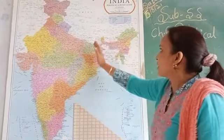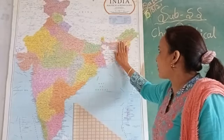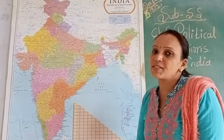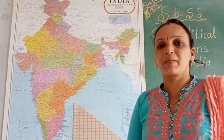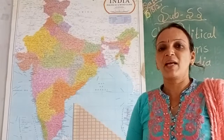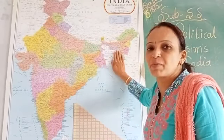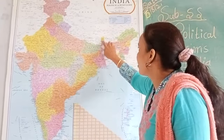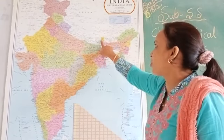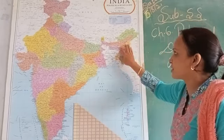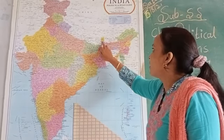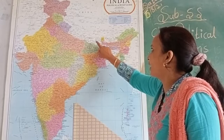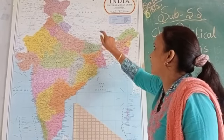These seven states are the seven eastern parts of India. Now, you know about the sisters — but who is their brother? This sister's brother is Sikkim. Sikkim is called the brother of the Seven Sisters, because it shares its border with Bhutan, Nepal, and China.